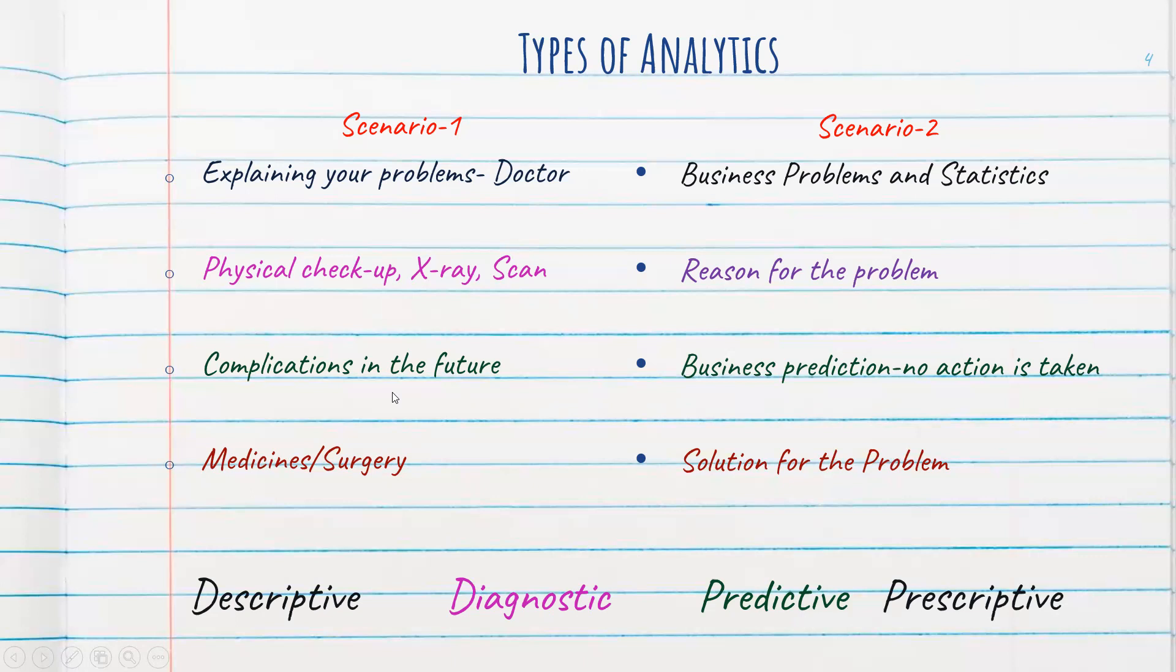The third step, the doctor was telling you about the complications in the future, in case if you didn't meet the doctor. The same thing is happening here, you are just predicting about the future. What could be the sales, what could be the expected sales in the upcoming months or years? How do we call this? Predictive analytics.